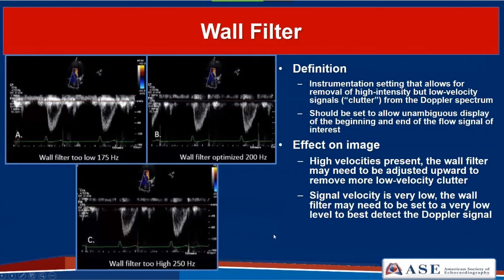The wall filter is an instrumentation setting that removes high-intensity but low-velocity signals or clutter from the Doppler spectrum. It should be set to allow unambiguous display of the beginning and end of the flow signal of interest. If velocities are high, the wall filter may need to be adjusted upward. If signal velocity is very low—like in perfusion studies—the wall filter may need to be set to a very low level. For example, looking at a pulse-wave Doppler signal from the LVOT: with the wall filter set too low, there's clutter along the baseline making timing of the waveform difficult; optimized at 200 Hz, the beginning and end of the waveform are clearly visible.